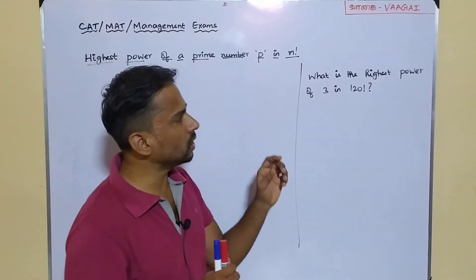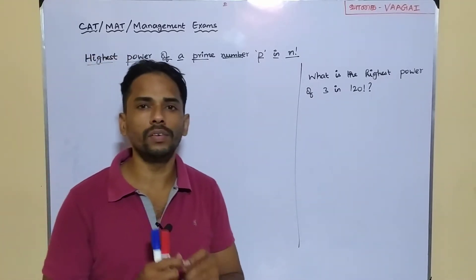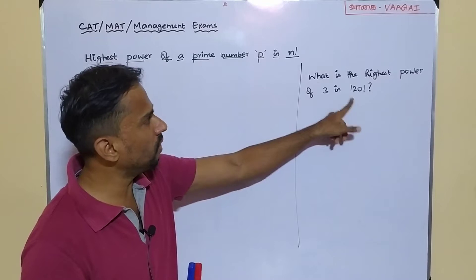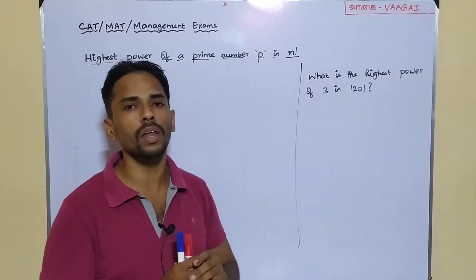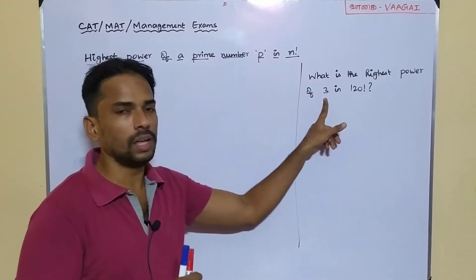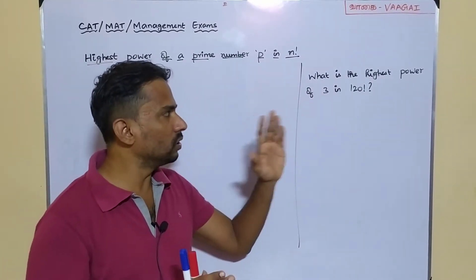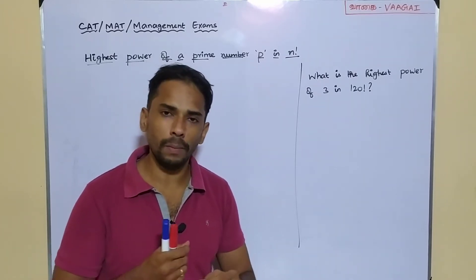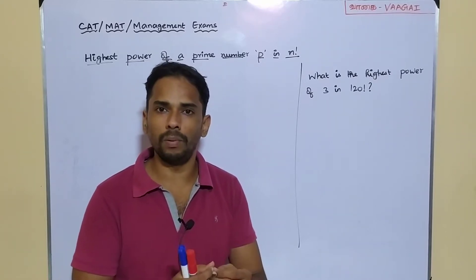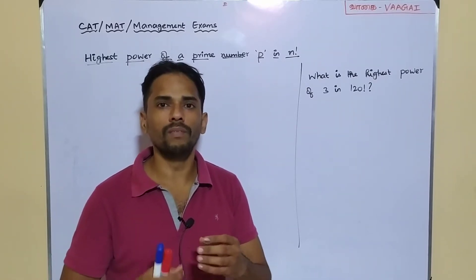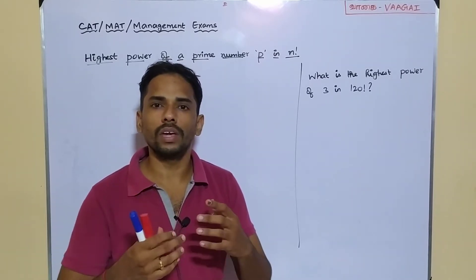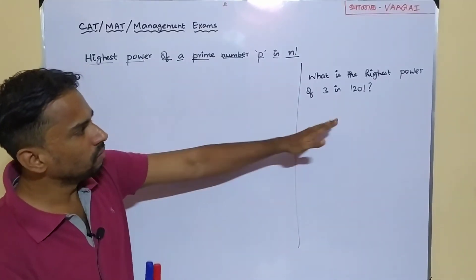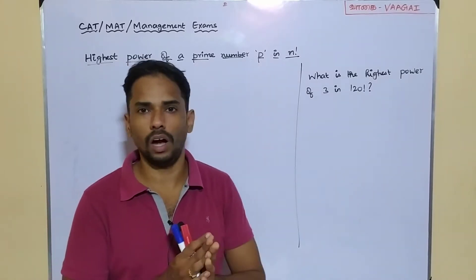Our question here is: what is the highest power of 3 in 120 factorial? Here the value of n is 120 and the prime number P is 3. We have to start from very basic, take a quick easy example, understand the concept, then work out a very easy shortcut and use that to find the answer.